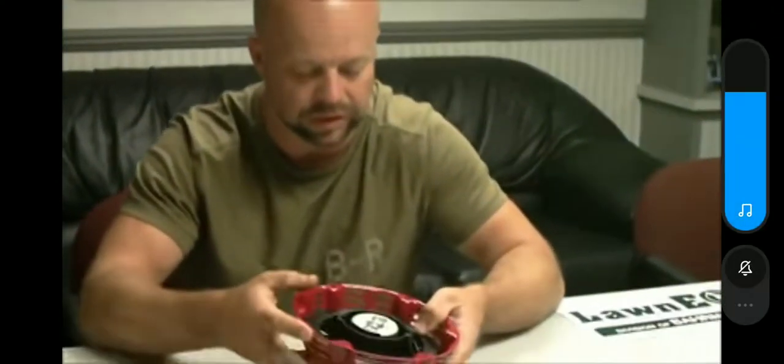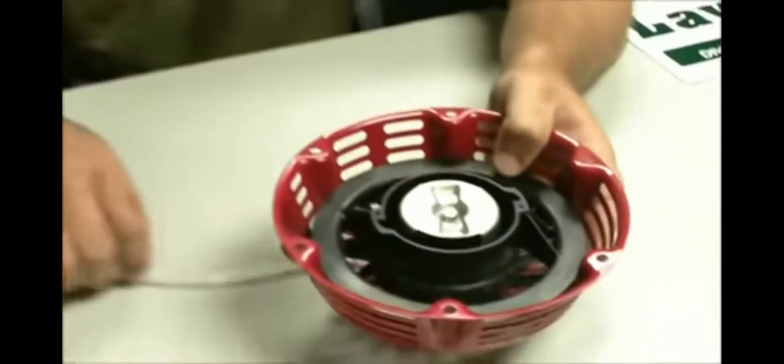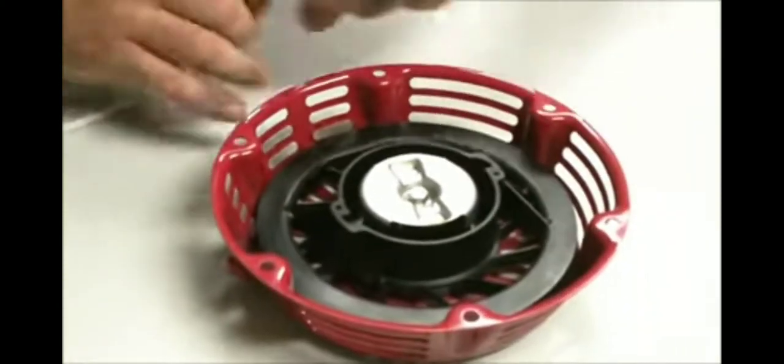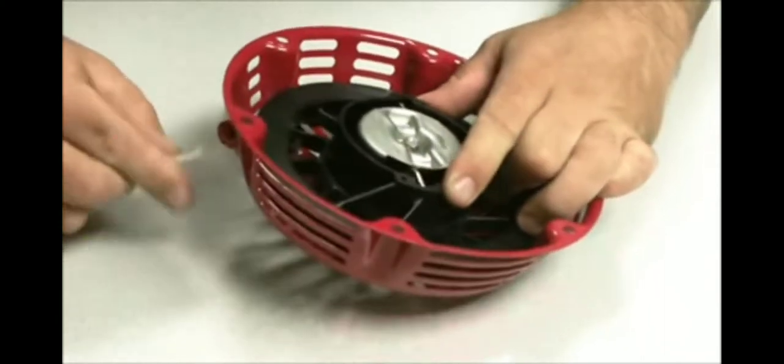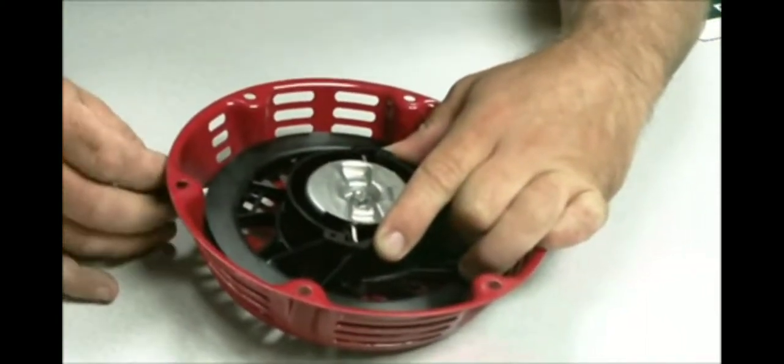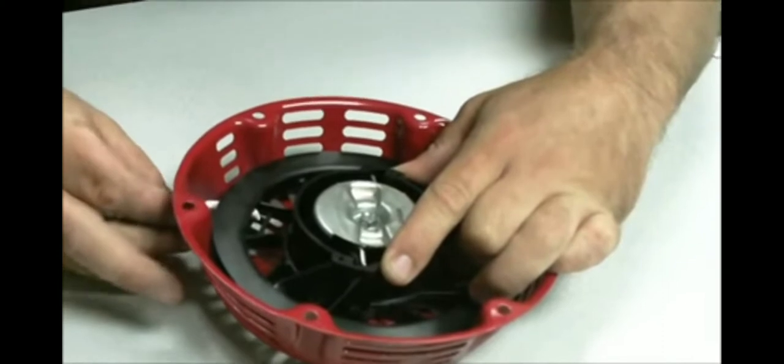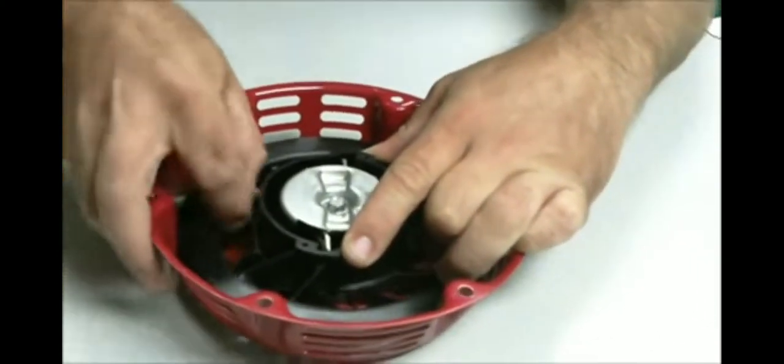There's a hole in the side of the pulley here. If you can see it, right in here. Basically, all you're going to do is feed your rope through it. You can go either which way you want. You should get it through there.